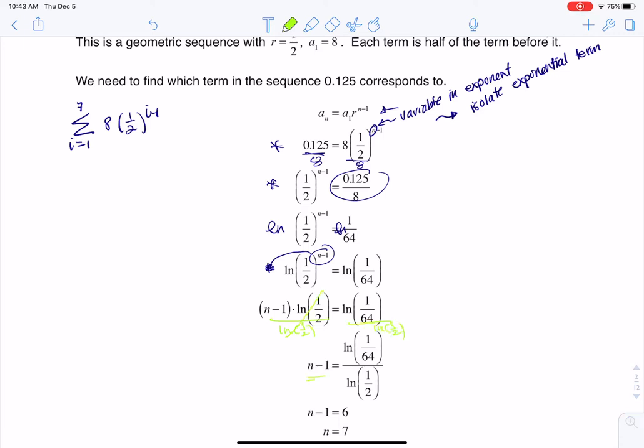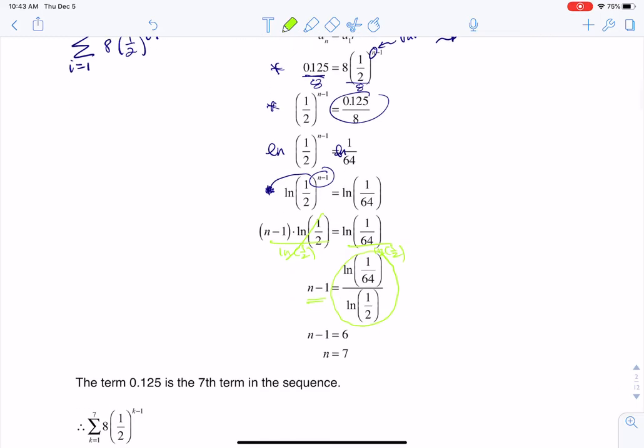This will cancel here, leaving me with n minus 1. And then I have this ugly looking fraction here. But if I crunch it on my calculator, I find out that it's just the number 6. When I add 1 to the other side, sure enough, I am getting n equaling 7.